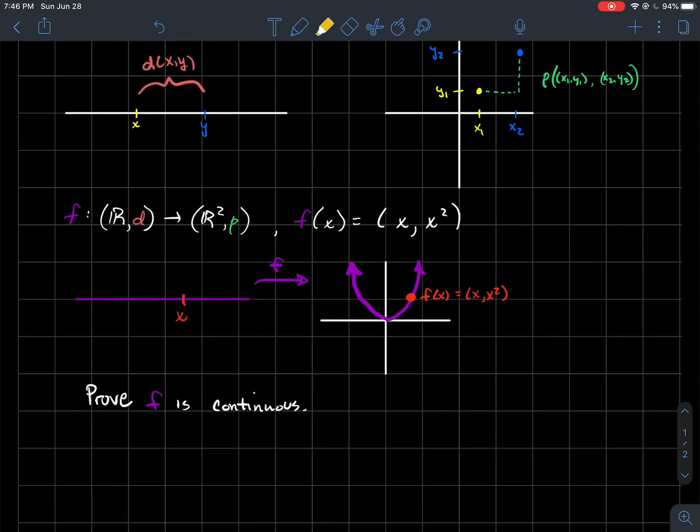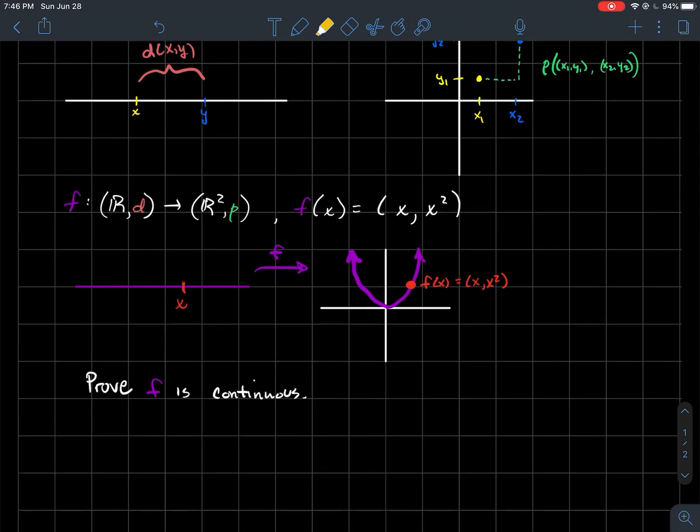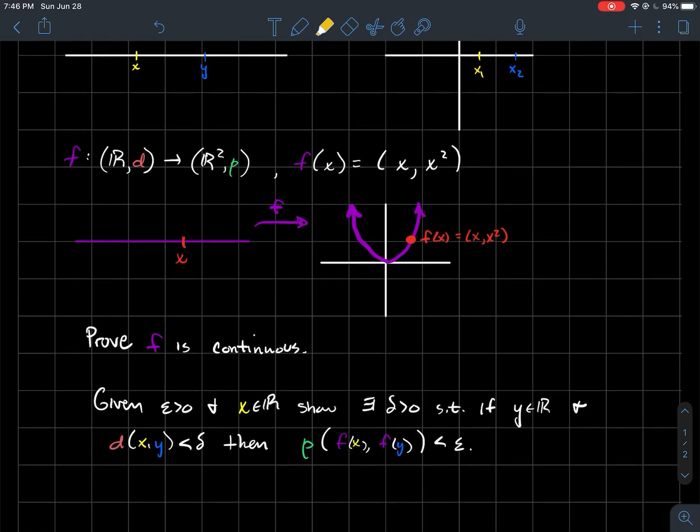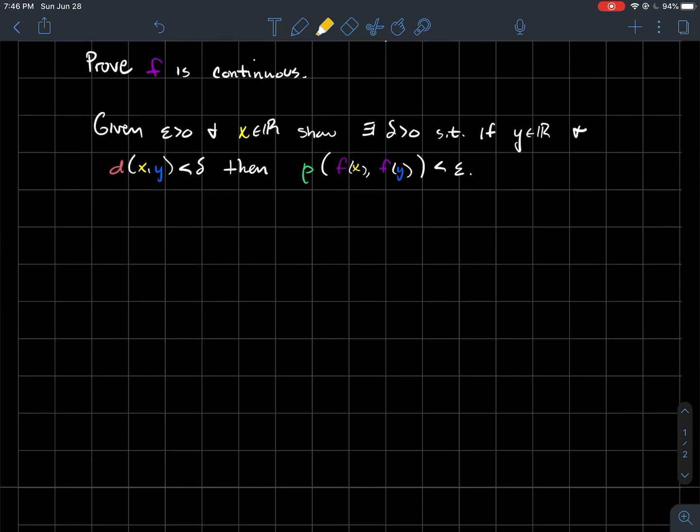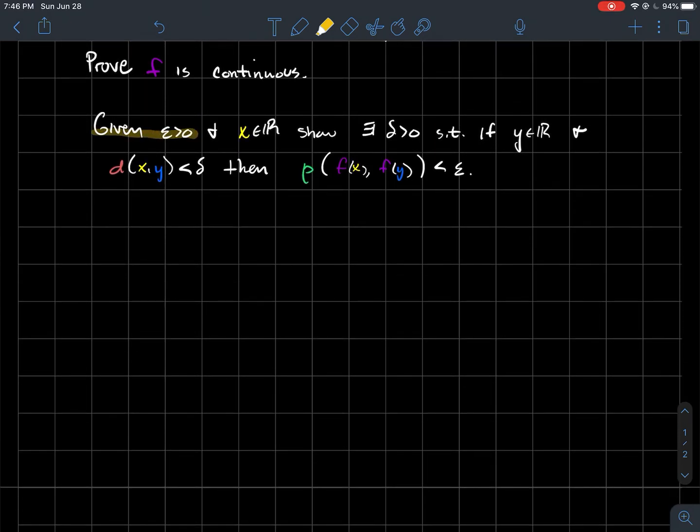So what we want to show is that f is continuous. So what's the definition of continuity for metric spaces? So to remind you of that, I've written that here. So given any positive number epsilon, and a particular value x in R, we need to be able to show that there exists a positive number delta, such that if y is a real number, where the distance between x and y is less than delta, in other words, x and y are within delta of each other, then the outputs f of x and f of y should be within epsilon of each other using the metric that's in the range or in the codomain.